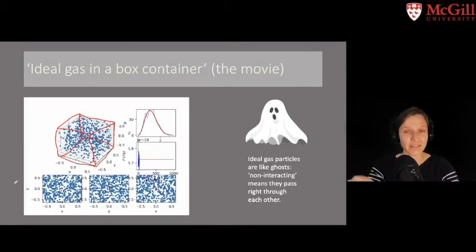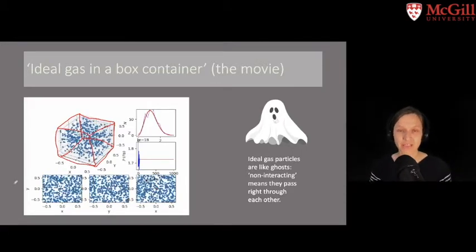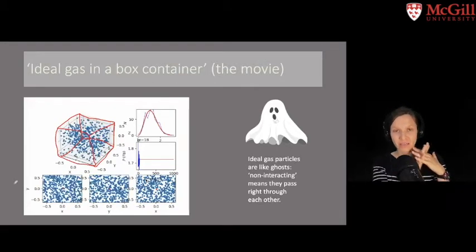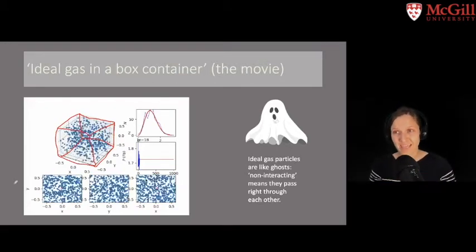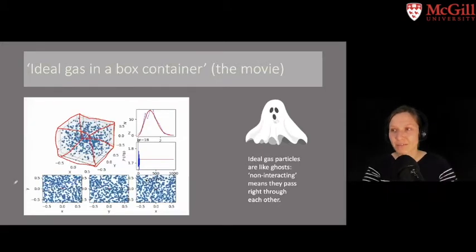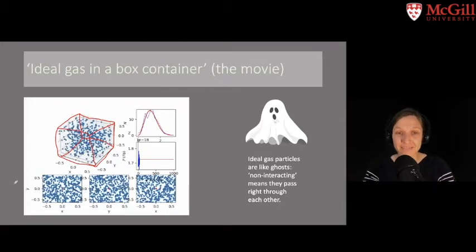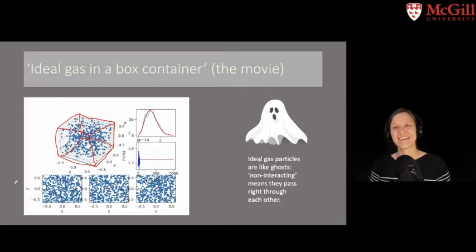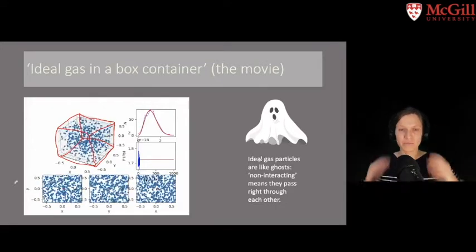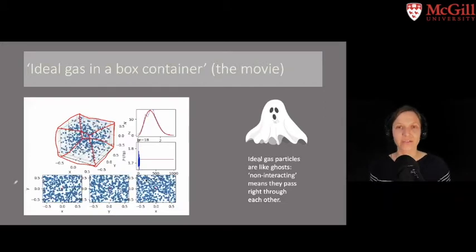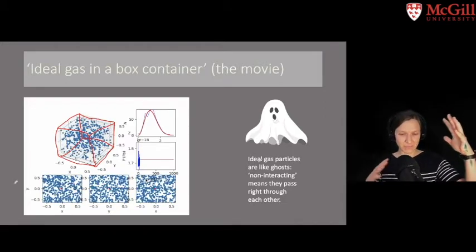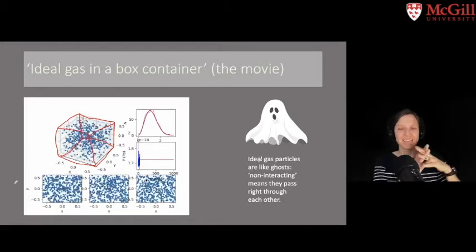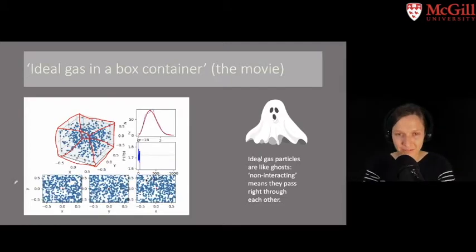They do not attract each other, they do not repulse each other, and they can literally pass through each other. They can occupy the same space. Now, that's a bit of an approximation, and they're kind of acting like ghosts. This is why I have the ghost diagram here, just to instill the image of the ideal gas particle as an entity that can occupy the same space with its neighbors.